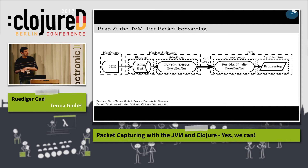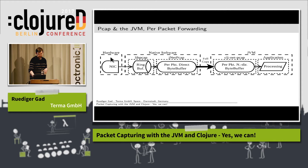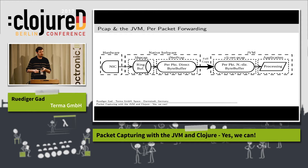Now let me show how packet capturing essentially works in the standard jnetpcap implementation. From left to right: you have the hardware with the network interface card, the native software, a ring buffer, and a per-packet direct byte buffer — that's already a Java class. Then you have to do a full copy into the JVM. The reason is that the direct byte buffer references a memory section in the ring buffer which will eventually be overwritten by subsequently captured packets if you don't process data fast enough, so you must do a full copy to avoid corrupted data.